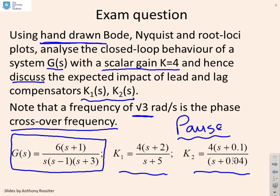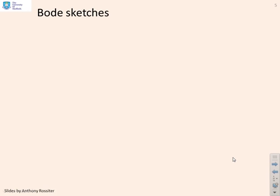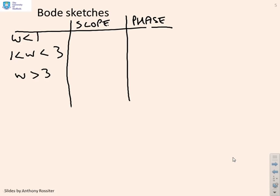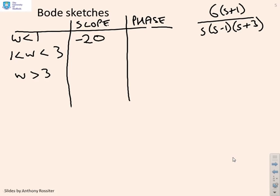For the Bode sketches, let's look at the key frequency ranges: omega less than 1, 1 less than omega less than 3, and omega greater than 3. Looking at the slope of the gain plot, we have (6s+1) / [s(s−1)(s+3)]. There's an integrator, so the initial slope is minus 20 dB/decade. When you go through a frequency of 1, there's an (s+1) in the numerator and an (s−1) in the denominator, so the slope won't change. Then going through (s+3), which is a pole, the slope will go to minus 40 dB/decade.